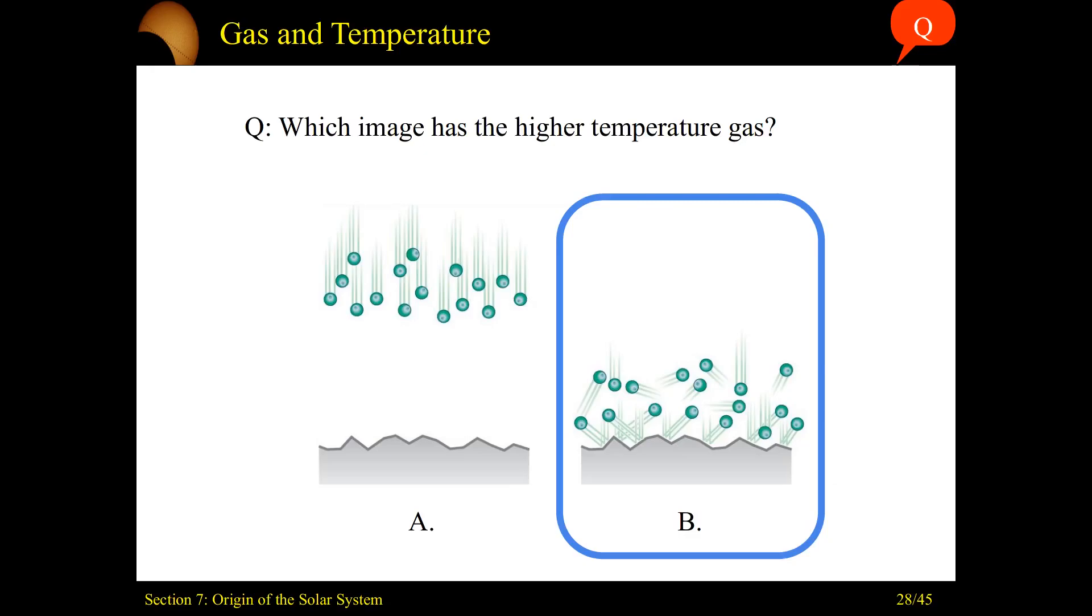Remember, temperature from our astronomical, our physicist's perspective - temperature is just the random motion and the average speed of these particles. So when they're going in random directions, that is going to up our temperature. These will be hotter objects.